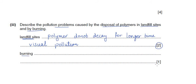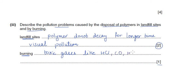For burning, which carries one mark: burning polymers evolves toxic or poisonous gases such as HCl, carbon monoxide, or in some cases HCN. It is not necessary to name the specific gases; we can simply write that it evolves toxic gases.